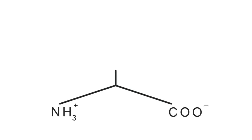From now on, all other amino acids are going to build off this backbone. We'll start with valine, whose single-letter abbreviation is V. Some of these mnemonics are going to be simple, but hopefully seeing them all in one place will help. For valine, we just add a V shape to our backbone, and we have valine.